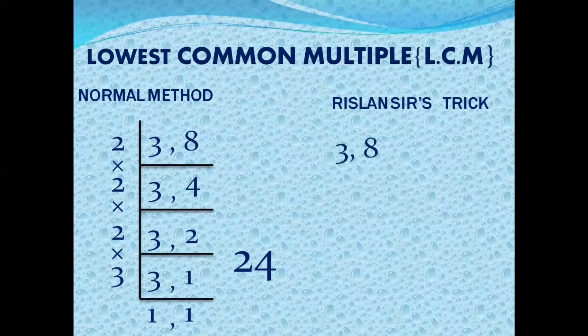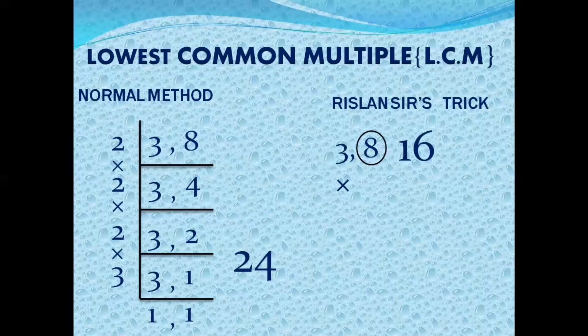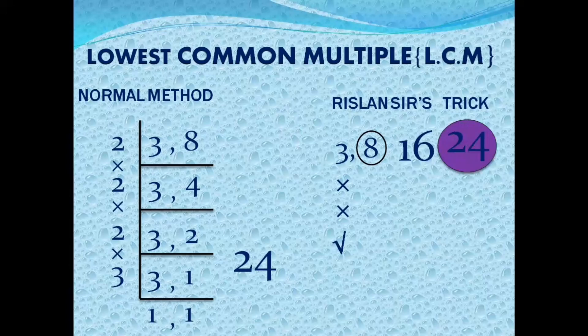According to my trick for 3 and 8: largest number is 8. Can 8 be divided by 3? No. Take multiples of 8: 2×8=16 — can 16 be divided by 3? No. 3×8=24 — can 24 be divided by 3? Yes. So the LCM is 24.